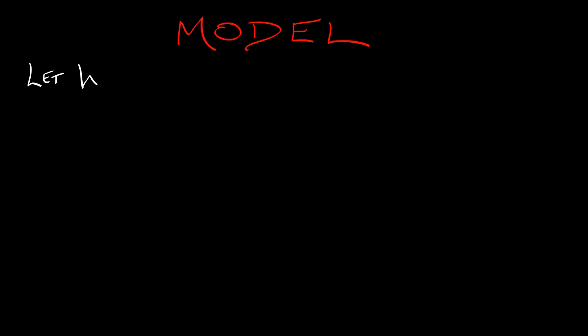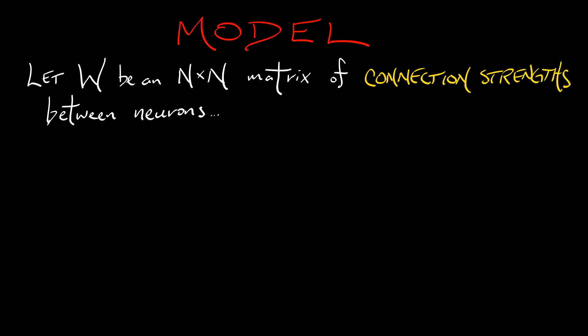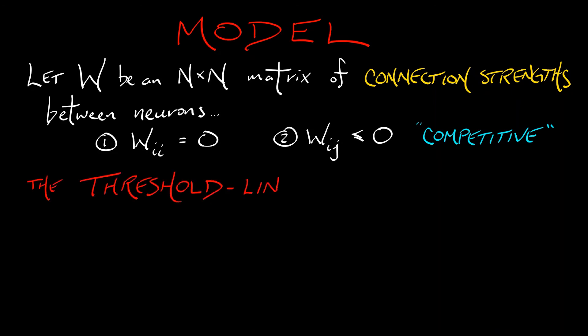Well, here's the model that we're going to explore. Let's consider W to be an n by n matrix of connection strengths between the neurons. We're going to make a couple of assumptions. First of all, along the diagonal, the connection strengths are all zero. Off the diagonal, if I look at the entries Wij, these are all going to be non-positive. This is what is called a competitive model. Each neuron is sort of competing against its neighbors for influence.